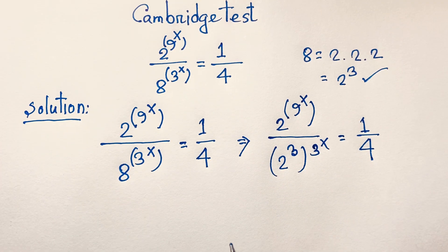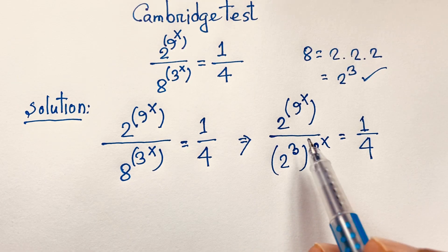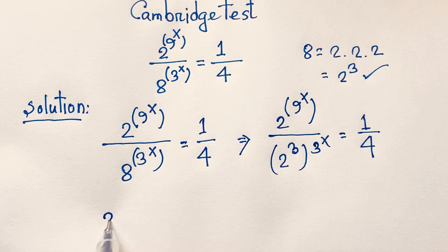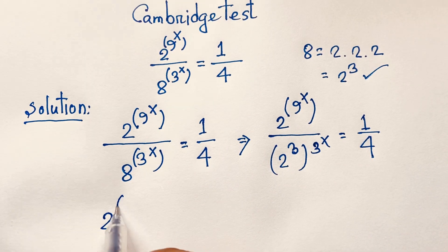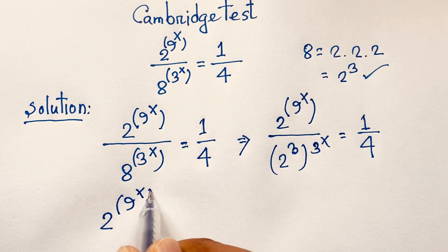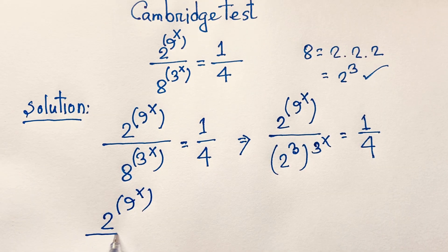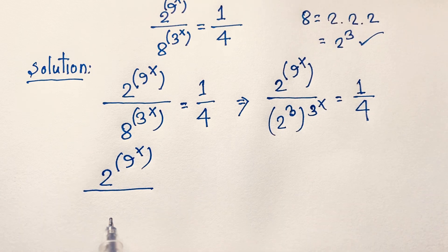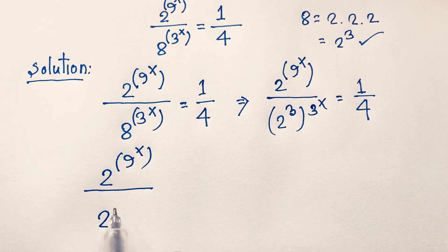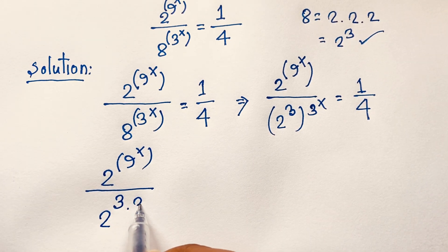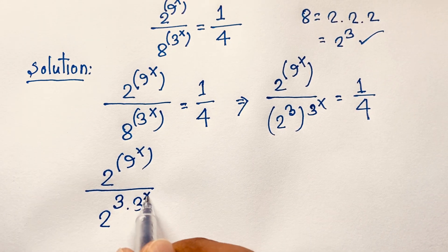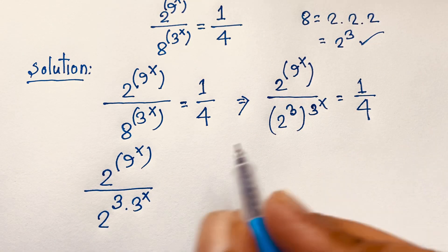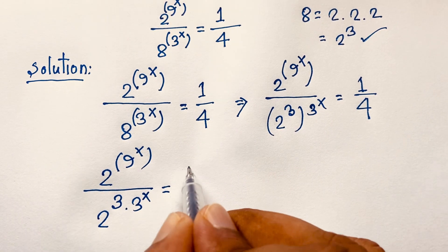At this moment you can see 2 to the power 9x. I apply the exponential formula: the denominator becomes 2 to the power 3 times 3 to the power x. And this equals 1 over 4.